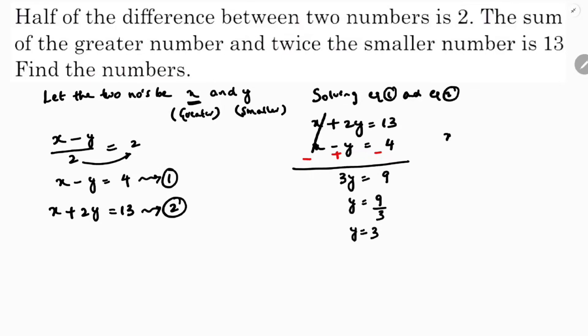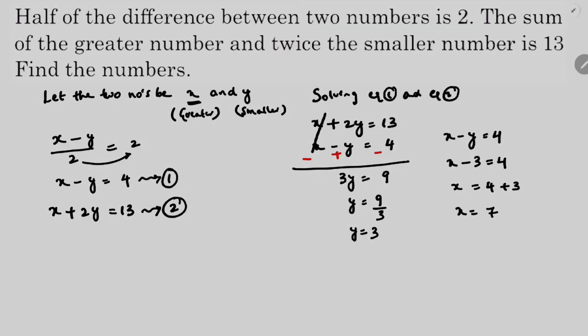Now taking equation 1, x minus y equals 4. Substituting y equals 3, we get x minus 3 equals 4, so x equals 7. The two numbers are 7 and 3.